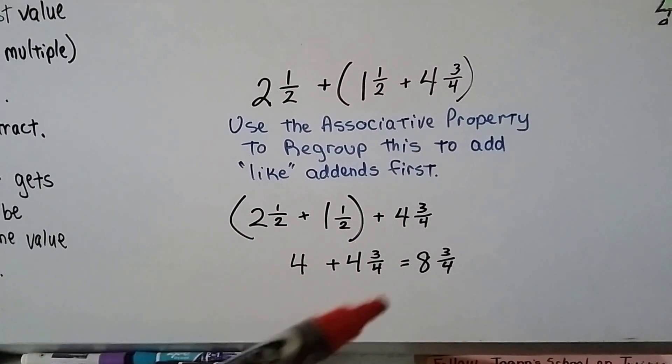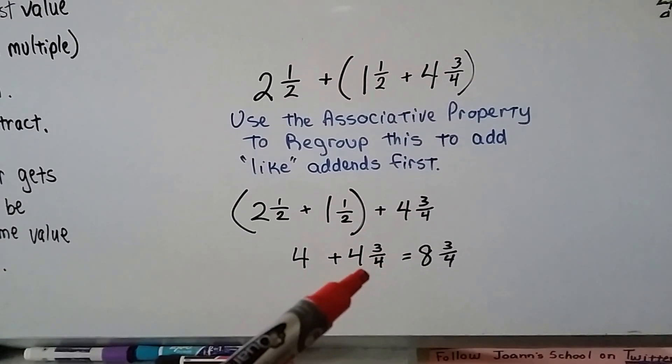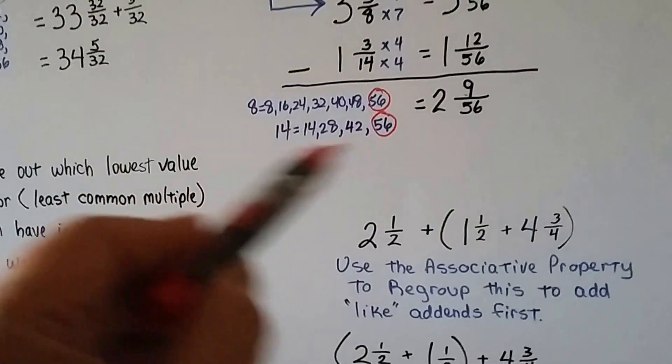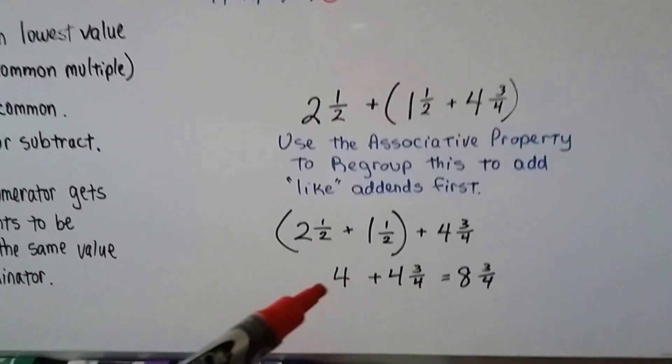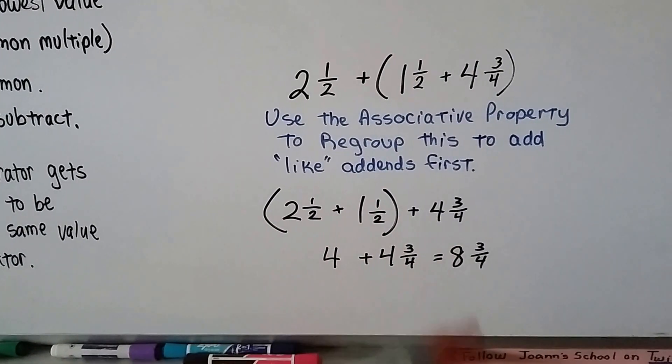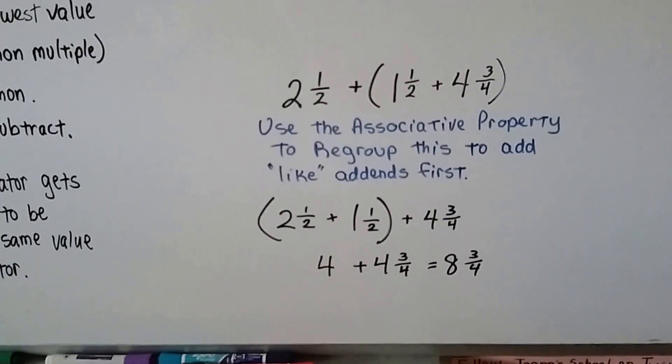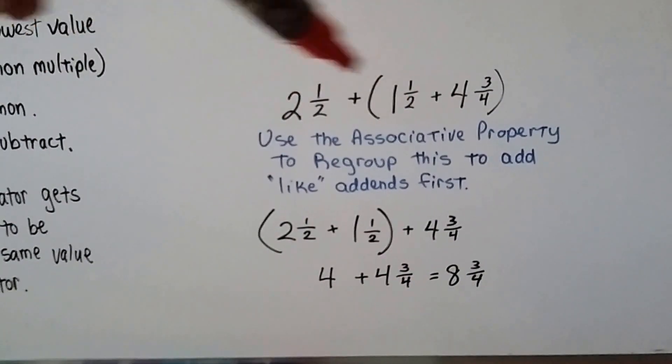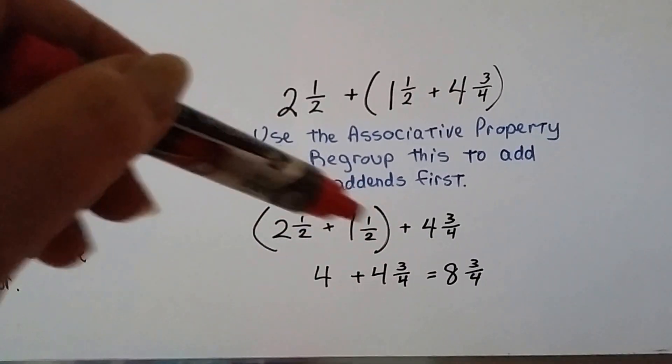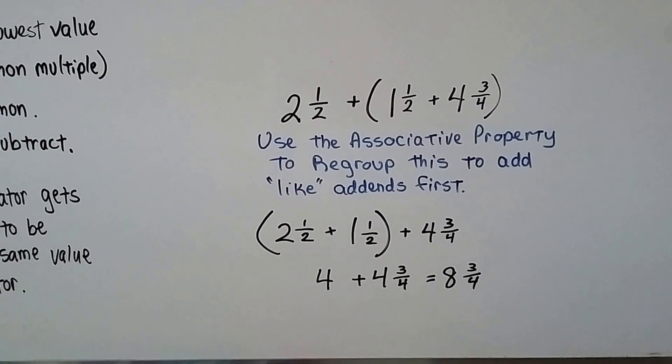Then when we add the 4 and 3 fourths, we don't have to do any of that work with the multiples and denominators because we can just add and get 8 and 3 fourths. So you can make it easier on yourself by regrouping these into easier fractions to add.